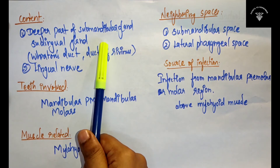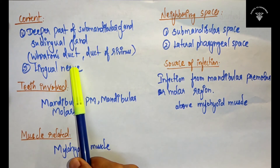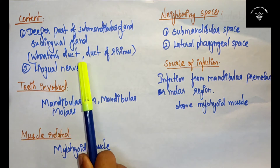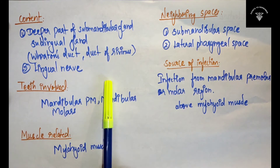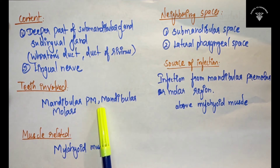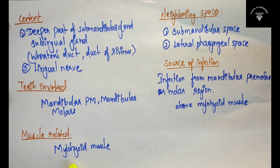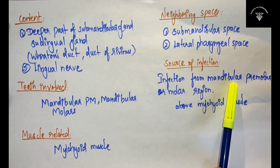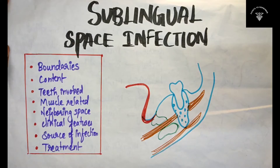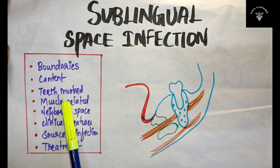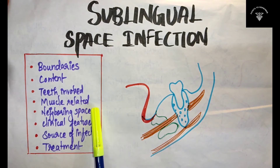To recap: the two important contents are the deeper part of the submandibular gland and sublingual gland with their two ducts — Wharton's duct and the duct of Rivinus — and the lingual nerve. The teeth involved are mandibular premolars and mandibular molars. The most important muscle related is the mylohyoid muscle. Neighboring spaces and source of infection have been discussed.